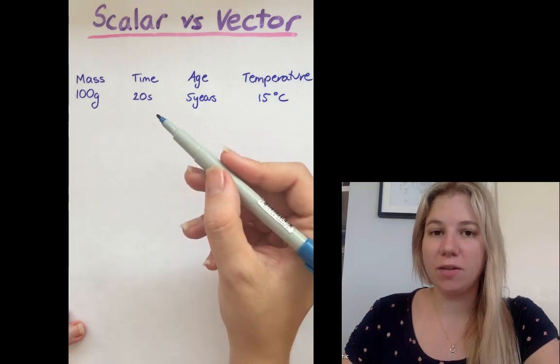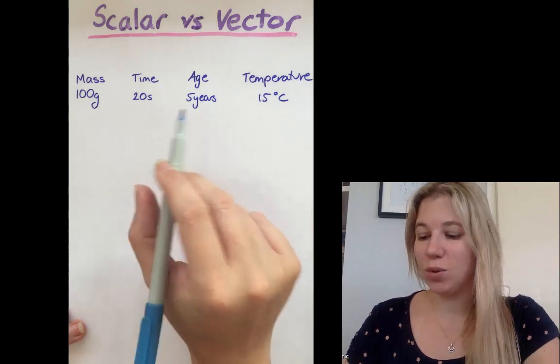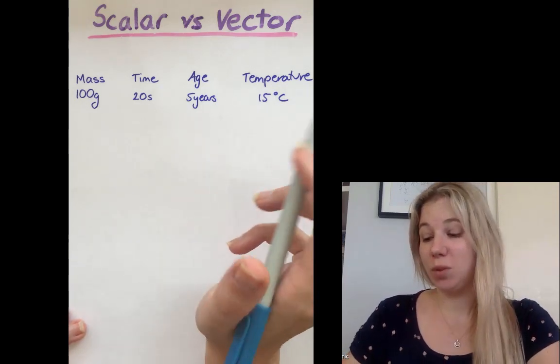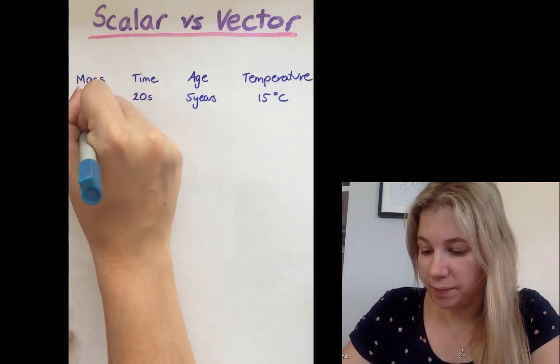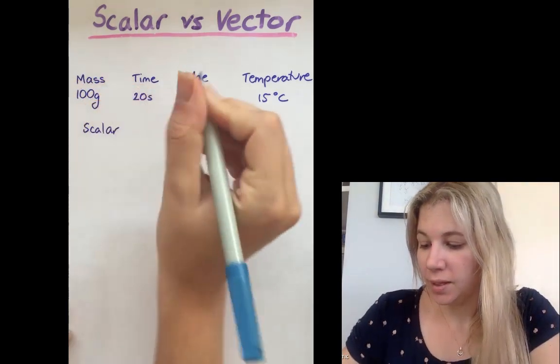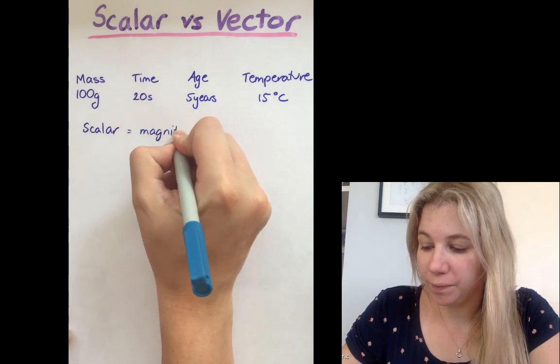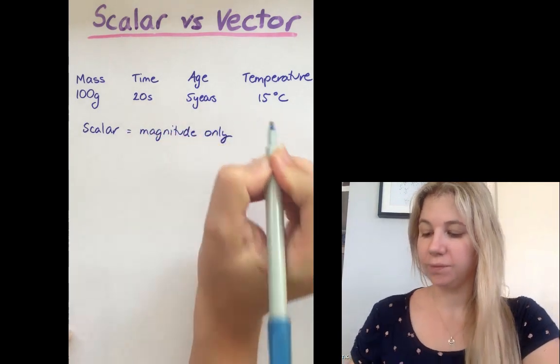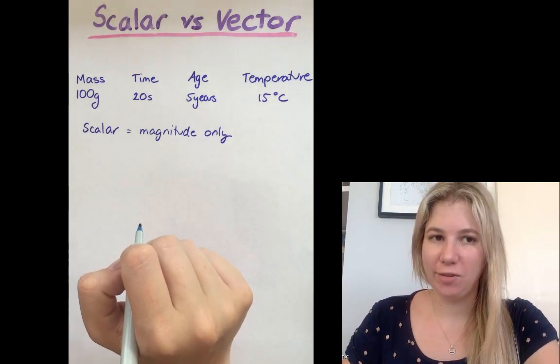The thing that makes them a scalar quantity and not a vector quantity is the fact that they only have magnitude. They don't have any sort of direction. In fact, these wouldn't make sense with a direction. So scalar quantities have a magnitude only, while vector quantities have a magnitude and a direction.